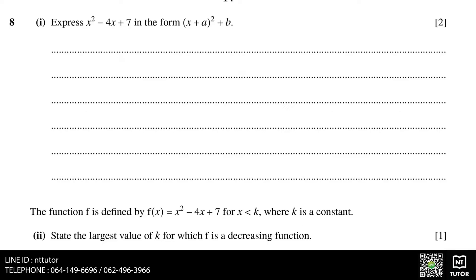Express x squared minus 4x plus 7 in the form (x + a) squared plus b. This is just completing the square.